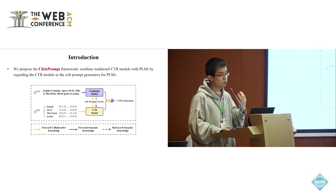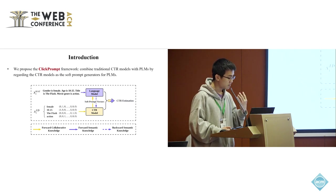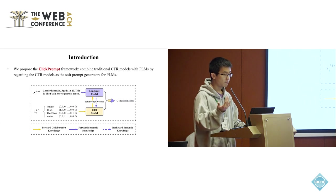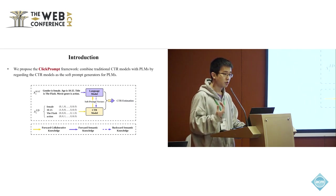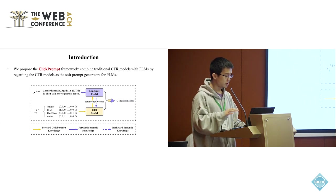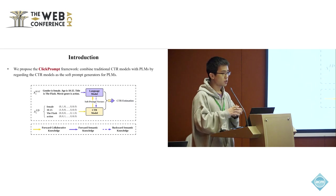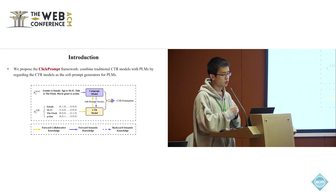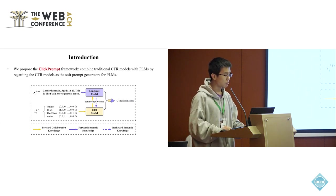And vice versa, during the backward propagation, the semantic knowledge, denoted as the dashed purple line, will then flow back from the language model into the CTR model. So in this way, we can therefore construct and establish a fine-grained alignment and interaction between these two kinds of different models and two different data modalities.